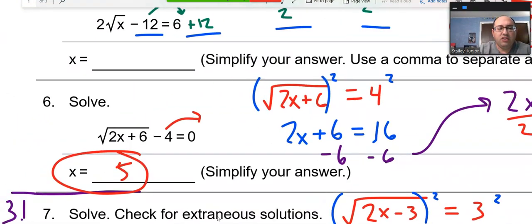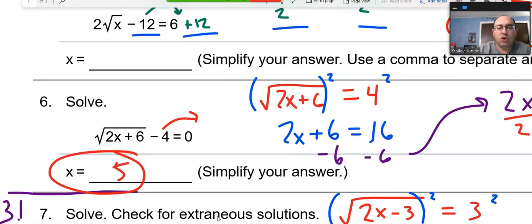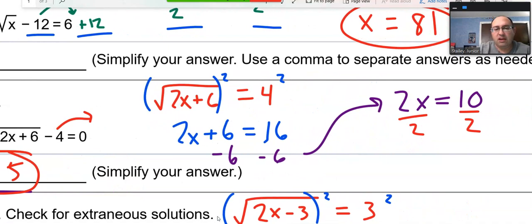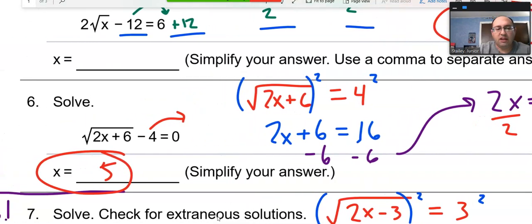Question 6 just refreshes our memory on a similar question to what we saw before. Add the 4, then you can go to the process of squaring both sides. And then doing the basic algebra, subtracting and dividing. Nothing fancy here. End up with 5 as your final answer there.